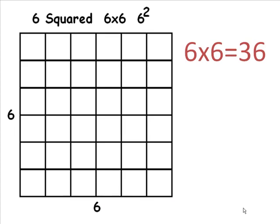6 squared, or 6 times 6, is 36. 36 squares are shown here. The length of the side of the larger square is 6. Square root of 36 is 6.